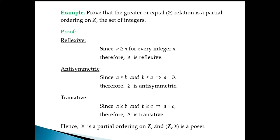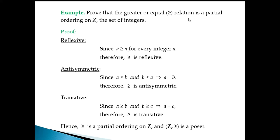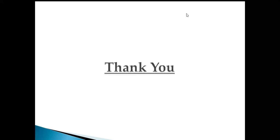Since reflexive, anti-symmetric, and transitive all hold, the ≥ relation is a partial order relation, and (Z, ≥) is a poset. Similarly, the ≤ (less than or equal to) relation also satisfies the partial order relation properties.